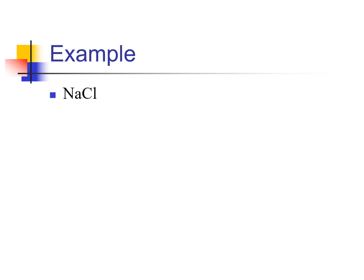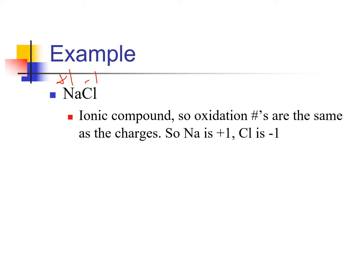Let's look at NaCl. It's an ionic compound because we have metals with nonmetals, so their oxidation numbers will just be whatever their charges are. Chloride has a charge of negative one; sodium has a charge of plus one. Those are the oxidation numbers on those atoms. For an ionic compound, the oxidation number is the same as the charges.